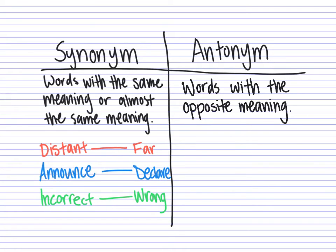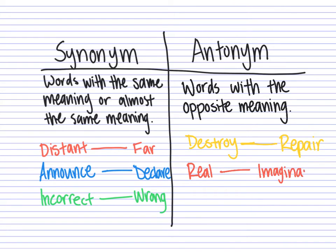Some examples of antonyms would be 'destroy' — the opposite of destroy is 'repair.' The opposite of 'real' is 'imaginary.' And one last example: the opposite of 'new' is 'old.' So, antonyms are words with opposite meaning, and synonyms are words that have the same meaning or almost the same meaning.